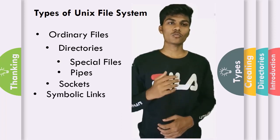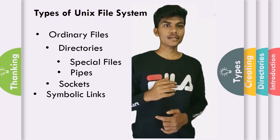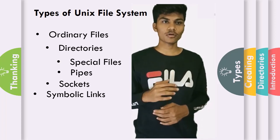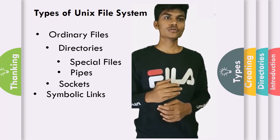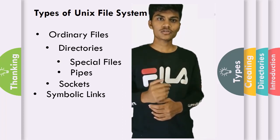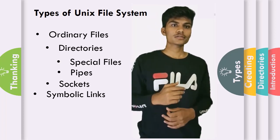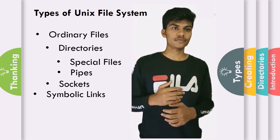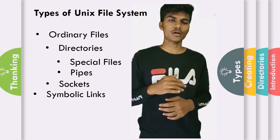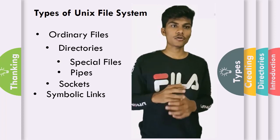First, ordinary files. An ordinary file is a file on a system that contains data, text, or program instructions. You store your information such as text you have written or an image you have drawn. This is the type usually worked with. It is always located under the directory file and does not contain any other files. In a long listing output, it is specified by a dash.